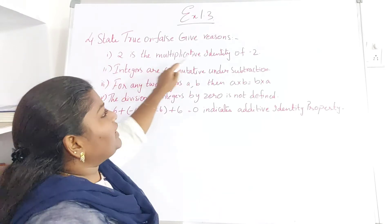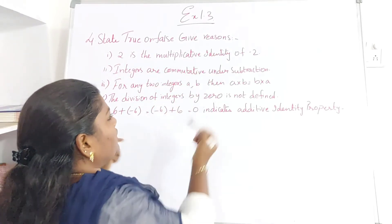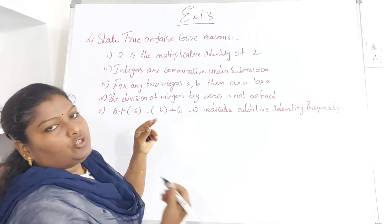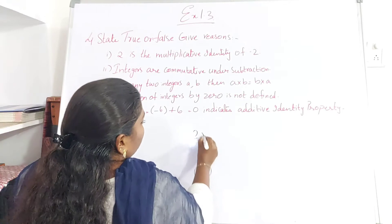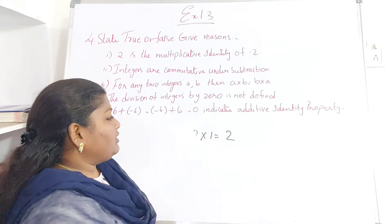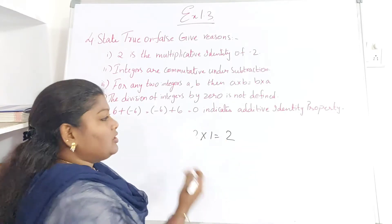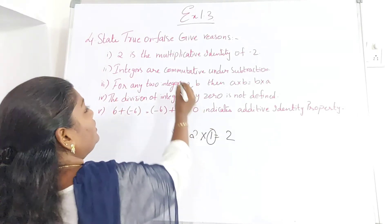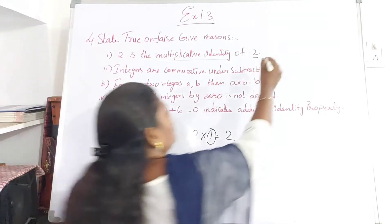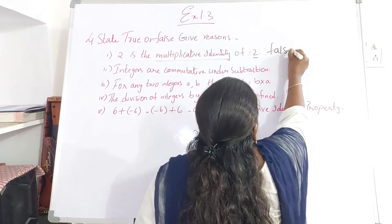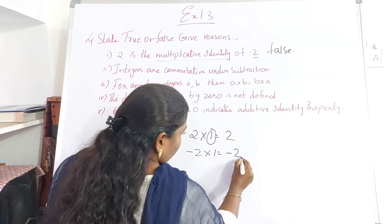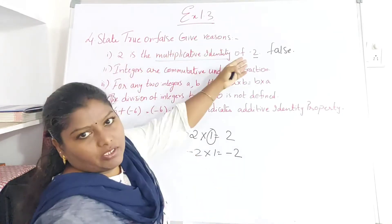The first one: 2 is the multiplicative identity of minus 2. Now, what is the multiplicative identity? It is an identity in multiplication where when you multiply a number by it, you get the same number. So 2 into 1 is 2 — if you multiply any number by 1, the product is the number itself. So 1 is called the multiplicative identity. But here it is given that the multiplicative identity of minus 2 is 2, which is false. Because minus 2 into 1 gives minus 2, not 2.